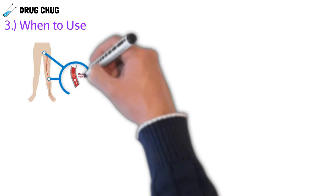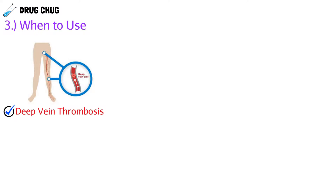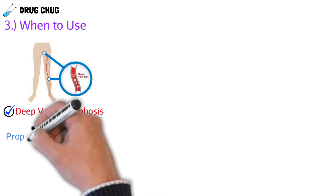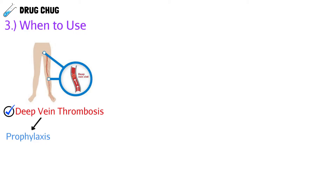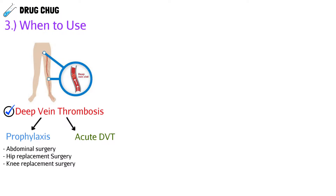Now let's talk about when we actually use enoxaparin. The first indication is if a patient has had or is at risk of a deep vein thrombosis — a blood clot in the deep veins, usually in the leg. We either give a prophylactic dose (the patient doesn't have a clot yet but is at high risk, such as after abdominal surgery, hip replacement, or knee replacement) or an acute DVT dose meaning they already have a clot and we need to treat it immediately.